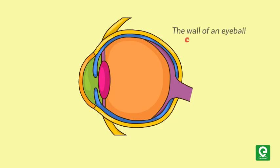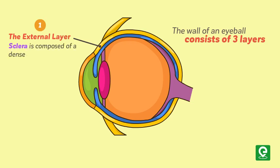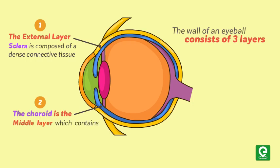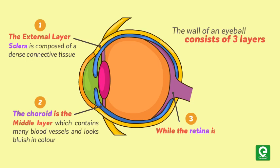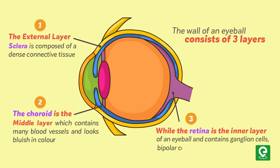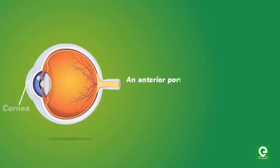The wall of an eyeball consists of three layers. The external layer, the sclera, is composed of dense connective tissue. The choroid is the middle layer, which contains many blood vessels and looks bluish in color. The retina is the inner layer of an eyeball and contains ganglion cells, bipolar cells, and photoreceptor cells.